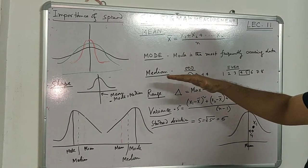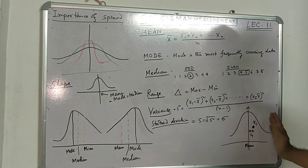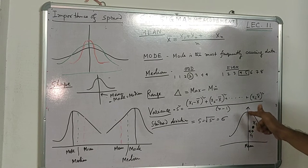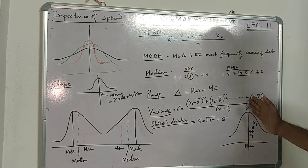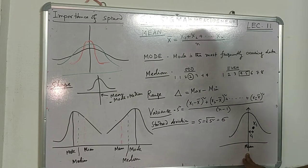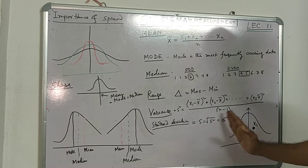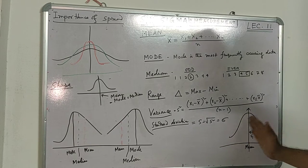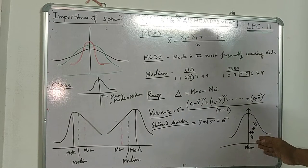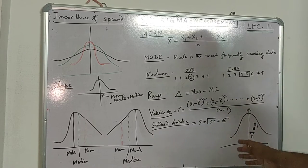For a standard normal distribution where data is symmetrically placed and most data points are centered along the target, mean, mode, and median will be the same. For a symmetrical normal distribution, it does not mean error is less—error may be more, but evenly spread. So mean, median, and mode will be the same regardless of whether error is high or low.